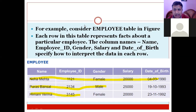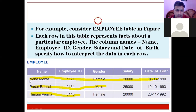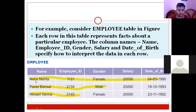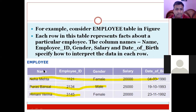One common mistake students make in exams is considering the heading row as the first row — it is not your first row. These are only headings, the names given to the columns. They are not part of the first row. The first row starts where we begin entering values. For example: Neha Mehta, Employee ID 1121, Gender Female, Salary 20,000, Date of Joining 24th March. The row starts from where values begin.